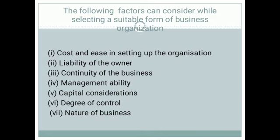The second factor is liability of the owners. By looking at liability, you can select the right form. Sole proprietorship and partnership have unlimited liability. In joint Hindu family business, the Karta has unlimited liability, but other members have limited liability. For joint stock company and cooperative society, the liability is limited.